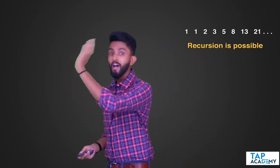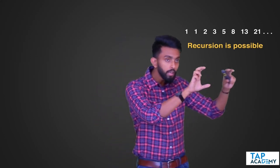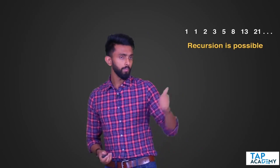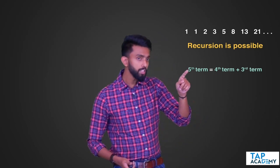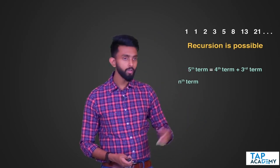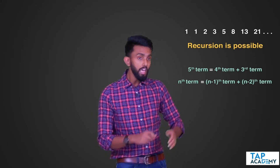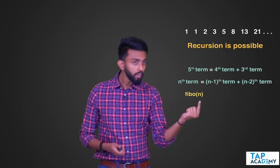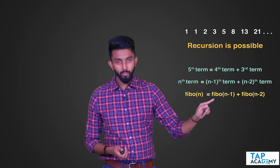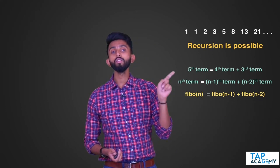Just like we formulated for factorial yesterday — factorial of n is n into factorial of n minus 1 — I want a recurrence relationship for Fibonacci. If I need the 5th term, that is the 4th term plus the 3rd term. Replacing with n: if I need the nth term, I need the (n-1)th term and the (n-2)th term. So if the function is Fibonacci(n), then Fibonacci(n) = Fibonacci(n-1) + Fibonacci(n-2).